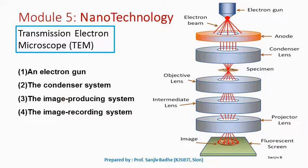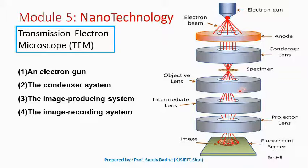Then we have the image producing system, which consists of an objective lens and an intermediate lens. These lenses focus the electrons passing through the specimen to form a real and highly magnified image. The objective lens is usually of a short focal length — 1 to 5 millimeters — and it produces a real intermediate image, which is further amplified or magnified with the help of a projector lens.